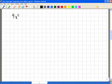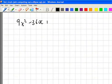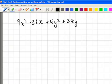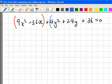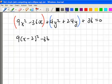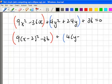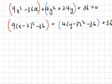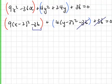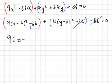Initially we have 9x-squared minus 36x plus 4y-squared plus 24y plus 36 equals zero. Now we bring back the completed square forms: 9 times (x minus 2) squared minus 36, plus 4 times (y minus 3) squared minus 36, plus the constant 36. We notice that negative 36, negative 36, and positive 36 cancel, leaving just one 36 which we bring to the right-hand side.